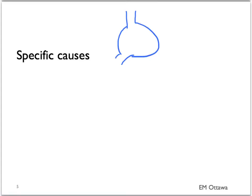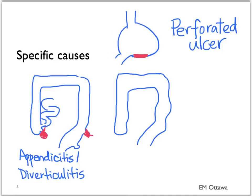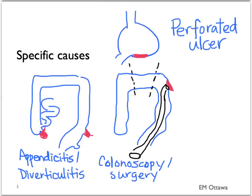Based on the specific cause of the perforated viscus, the patient's presentation might include different things as well. The causes of perforated viscus include a perforated ulcer, local inflammation such as appendicitis and diverticulitis, post-instrumentation such as colonoscopy or after surgery at the anastomosis site, and lastly bowel obstructions.